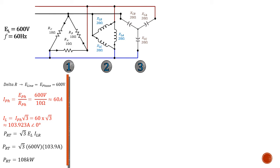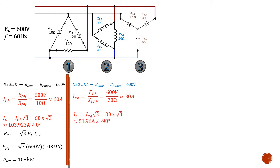We now move on to the second part: the delta-connected inductance. Using the same principles, the phase and line voltage are the same in a delta, which gives us 30 amps per phase in our inductive circuit. Since it's a delta, we compensate for the line current, which works out to be about 51.96 amps at a lagging 90 degrees. Currents lag in inductive circuits. With our line current in hand, we solve for our total inductive power, which works out to be 54 kVArs inductive.